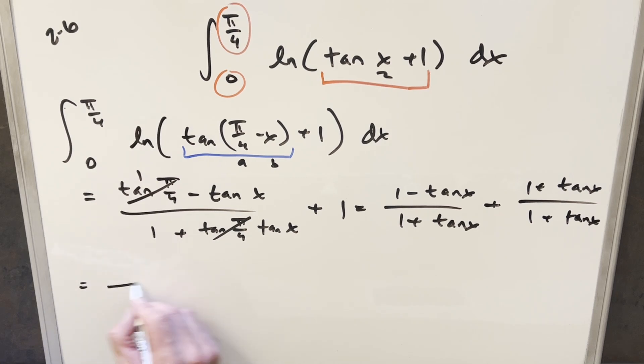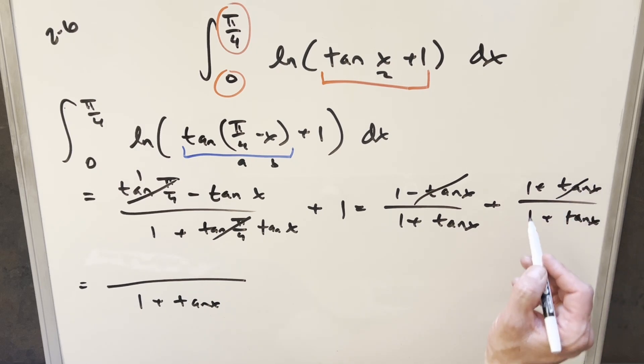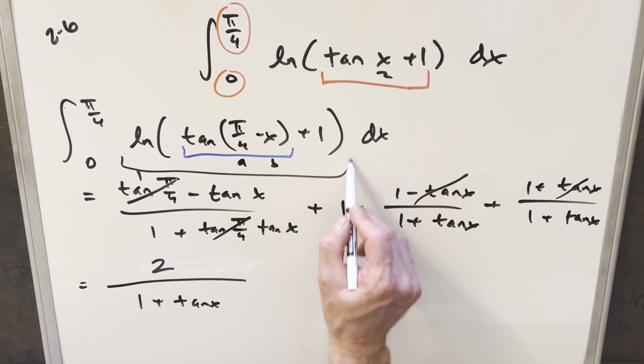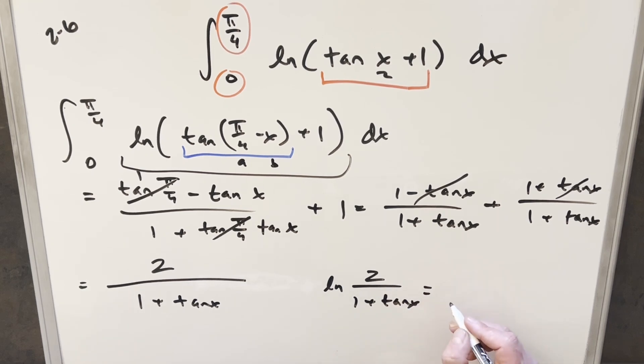But now coming over here, now we have a common denominator, one plus tan x. And putting together the numerator, the tangents are going to cancel. And then we just have one plus one or two here in the numerator. So for all this right here, bring back the natural log, I can write this as natural log of two over one plus tan x. But then with log properties, we can break this up and write it as ln two minus ln one plus tan of x. So now let's take this expression right here, put it back in the integral and continue from there.